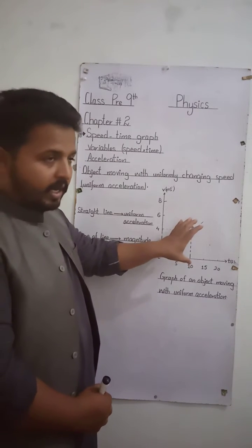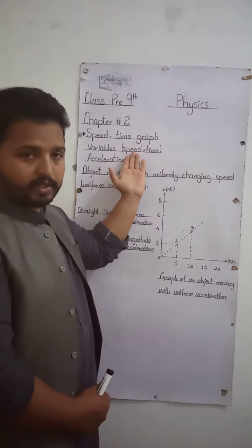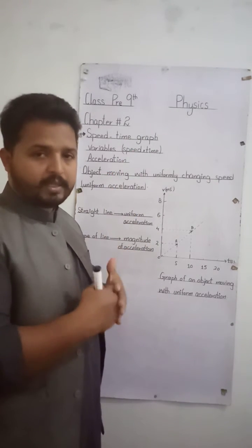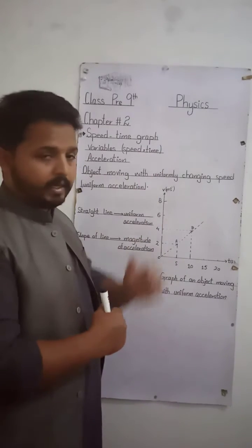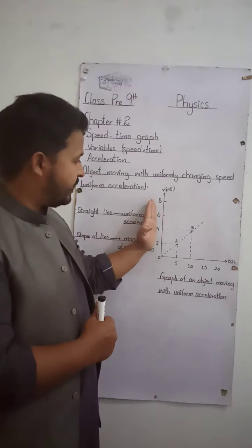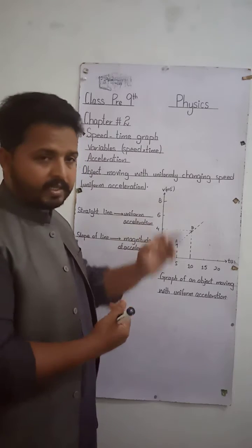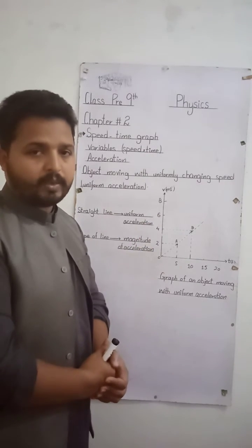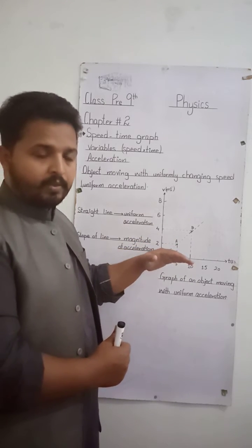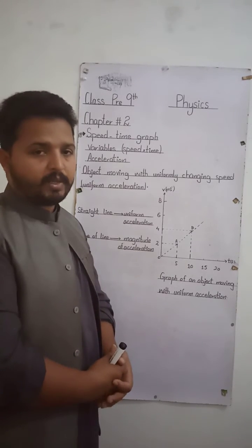In this graph, we have two variables: speed or velocity — I have told you before that we can use speed and velocity interchangeably — and time. Time is along the x-axis, which is independent, and speed or velocity in meters per second is along the y-axis, which is dependent upon time. This graph is discussed in terms of acceleration, that is, the rate of change of velocity.